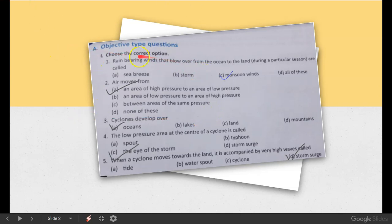So our first question is objective type questions. So our first exercises are choose the correct option. Number 1. Rain-bearing winds that blow over from the ocean to the land during particular seasons are called sea breeze, storms, monsoon winds or all of these. So option C is the correct answer.